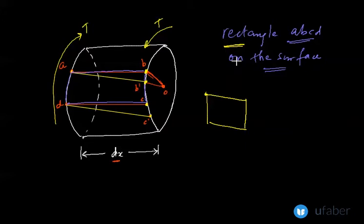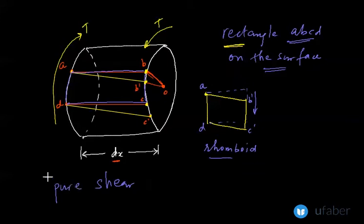Initially it was of this shape. Now it has been subjected to shearing and it has become A B dash C dash D. This shape is known as a rhomboid. So this twisting has transformed the rectangular element ABCD into a rhomboid A B dash C dash D, and this is occurring because of pure torsion which produces pure shearing. There is no bending occurring at any cross-section whatsoever.